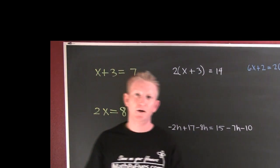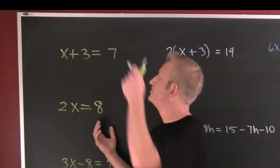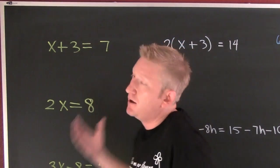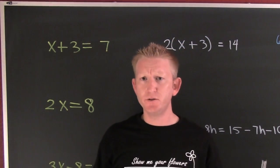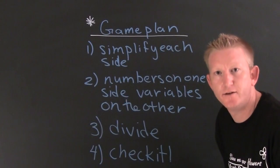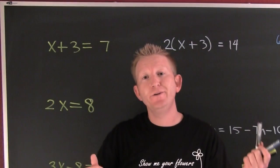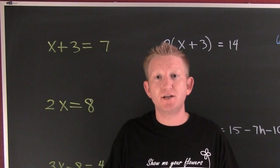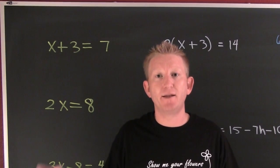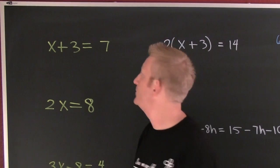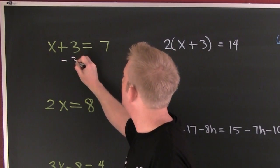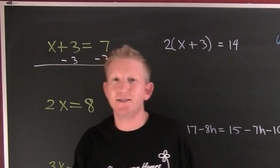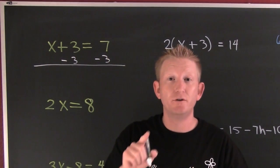Let's solve some equations. Let's start over here — I have x plus 3 is 7. Numbers on one side, variables on the other. I want to use the additive property of equality: if I have something in balance and I take the same amount off each side, it's still going to be in balance. What I want to do is take a 3 off each side — a 3 off each side.